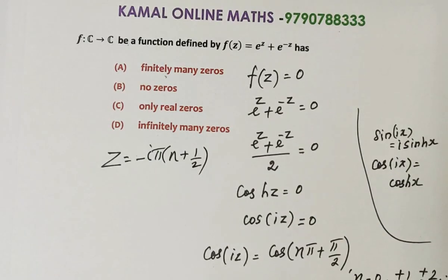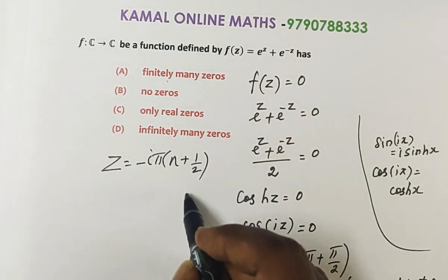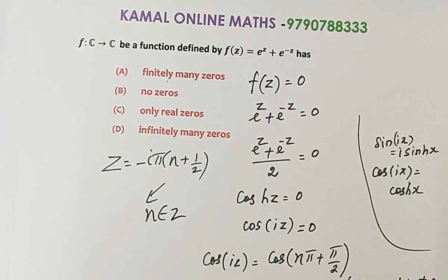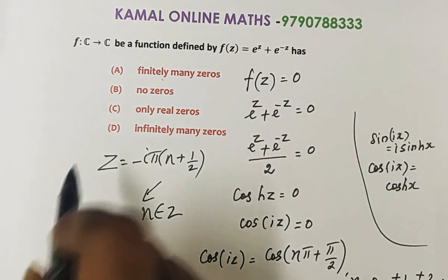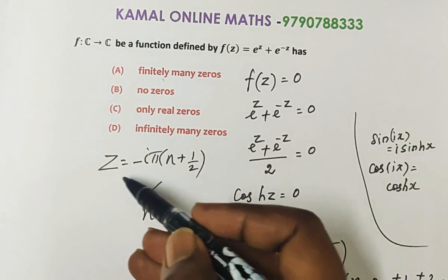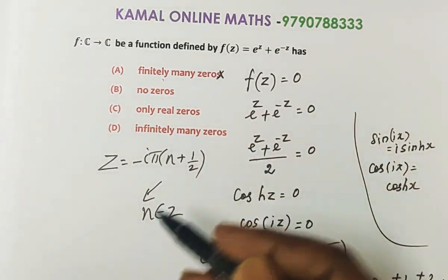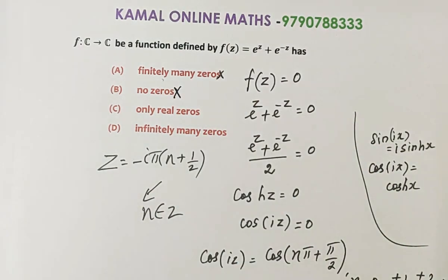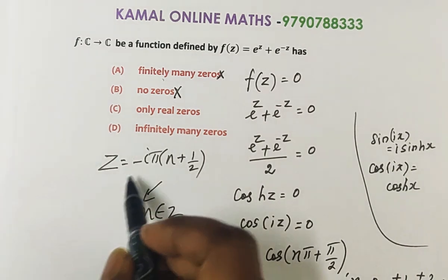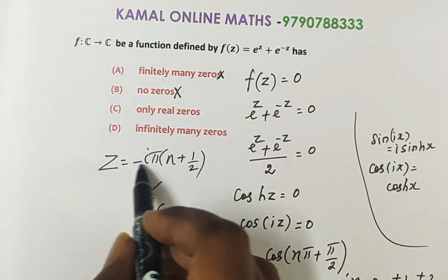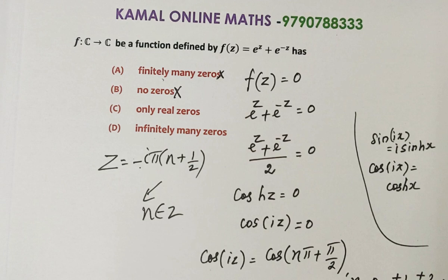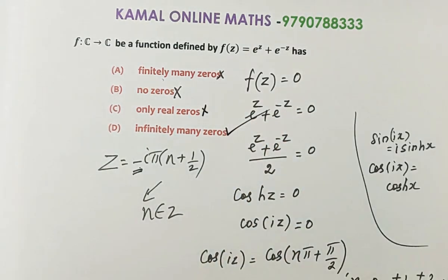Since n ranges over all integers, which is an infinite set, we get infinitely many different z values. Finitely many zeros is wrong; no zeros is wrong; only real zeros is wrong because z has an imaginary unit i. Therefore the answer is option D: infinitely many zeros.